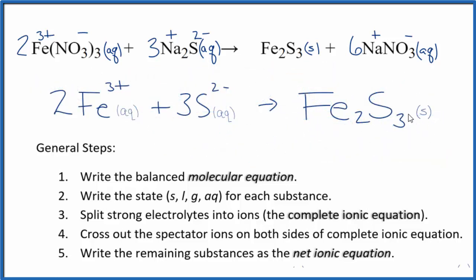And this is the balanced net ionic equation for iron three nitrate plus sodium sulfide. You'll notice that charge is balanced. I have two times three plus. That's six plus. Three times two minus is six minus. That's six plus, six minus. Net charge is zero. This is neutral, so the net charge is zero. Charge is balanced. If you count the atoms up, they're balanced as well.